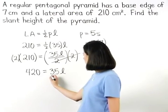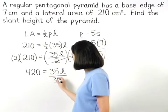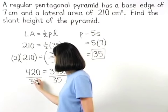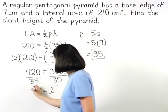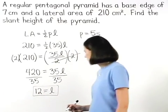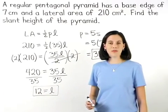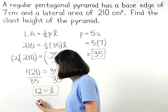And dividing both sides by 35 we find that 12 equals L. So the slant height of the given pyramid is 12 centimeters.